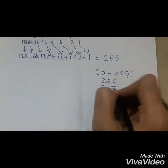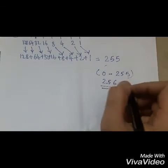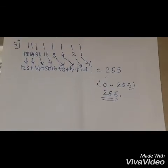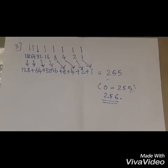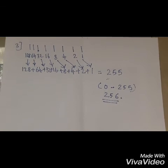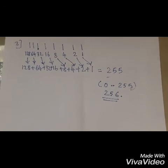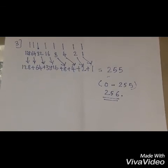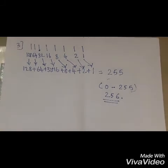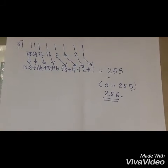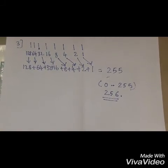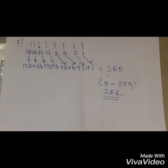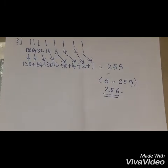So 256 values are possible when we convert binary numbers into decimal form. Thanks — if you like this video, do like, share, and subscribe. Thanks for watching, and practice this at home — it's an easy method.